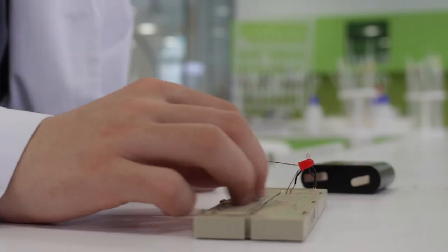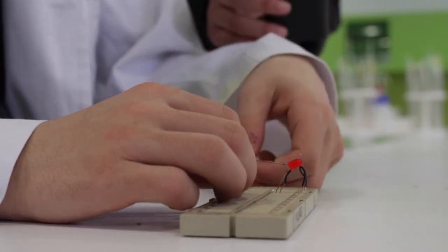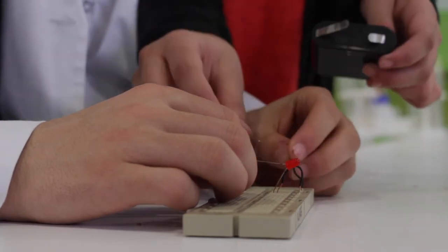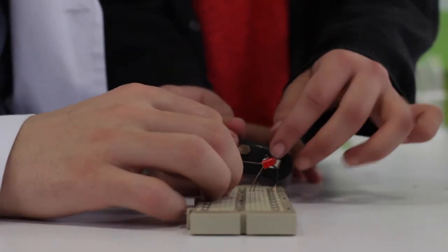We'll repeat the process with the other two materials. In this case, graphite, given the small size of the particles used, is hard to attach to the circuit. Once this is done, we'll see if it's a good conductor.